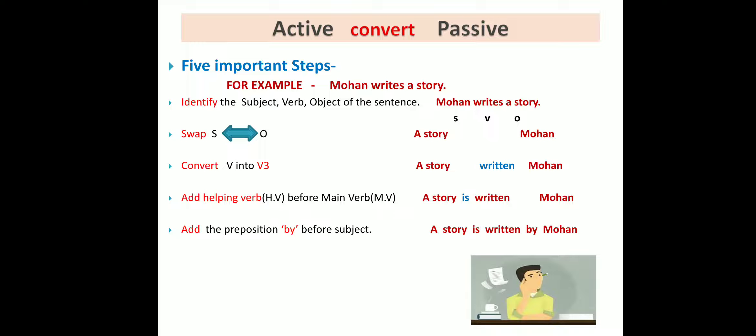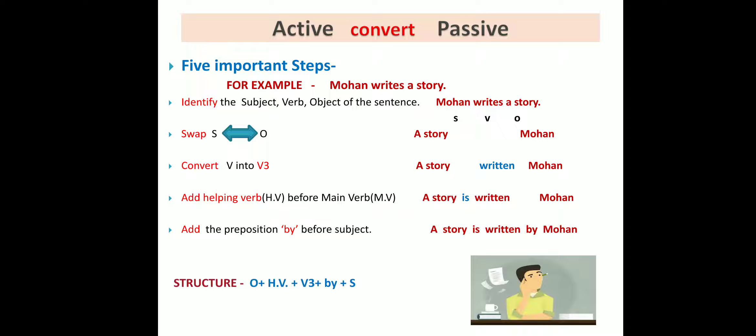The final step: add the preposition 'by' before the subject. So we add 'by' before Mohan. The resulting passive voice sentence is: 'A story is written by Mohan.' The structure of passive voice is: object + helping verb + verb (third form/past participle) + by + subject.